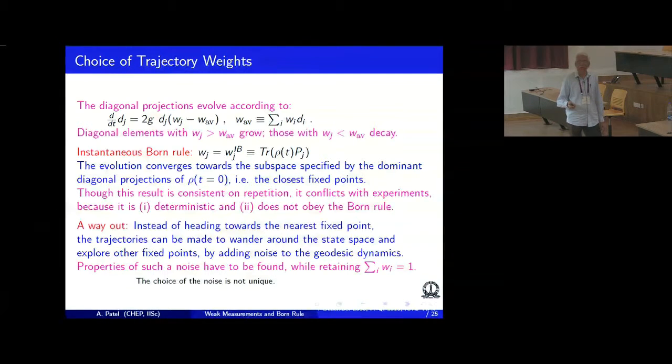So I can add various kinds of noise. The consequences: if the weights are fixed according to this instantaneous Bond rule, I go to the closest fixed point. If I make the weights completely random, I get a democratic distribution—it goes to all the fixed points with equal probability. And for some intermediate value of the noise, I go to the various fixed points according to the Bond rule.